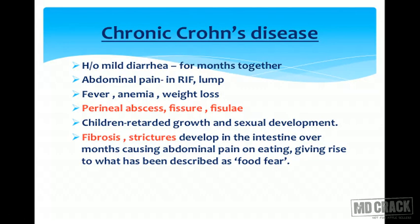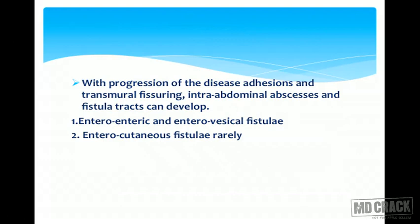Fibrosis and stricture develop in the intestine over months, causing abdominal pain on eating, giving rise to what has been described as food fear. With progression of the disease, adhesion and transmural fissuring, intra-abdominal abscesses, and fistula tracks can develop — including enteroenteric fistula, enterovesical fistula, or very rarely enterocutaneous fistula.